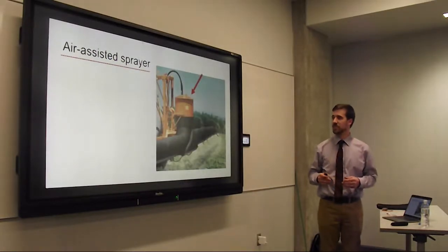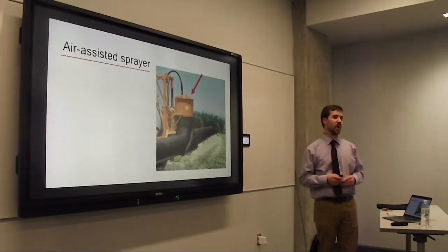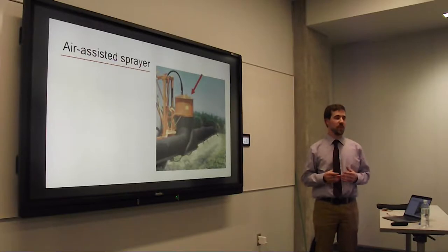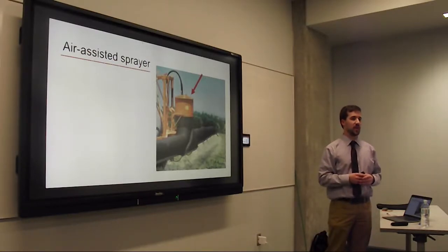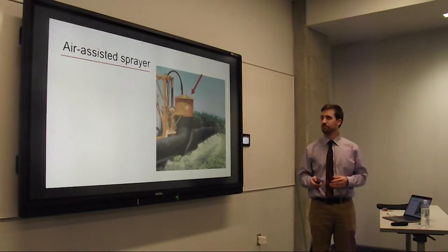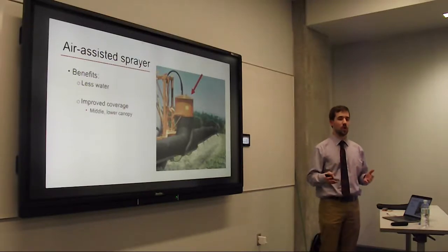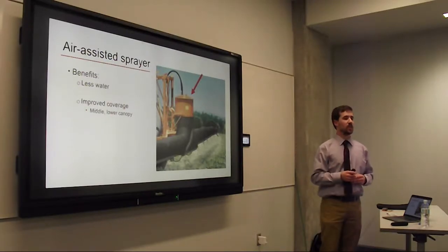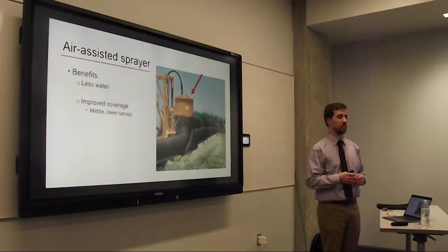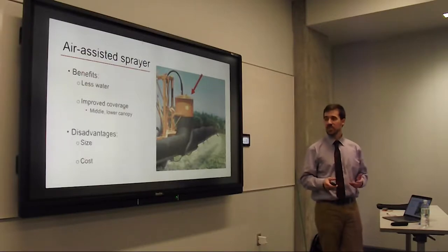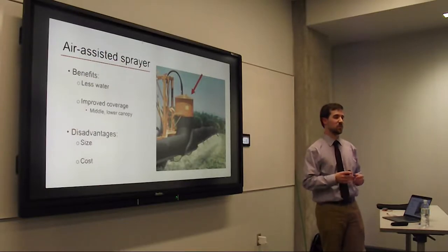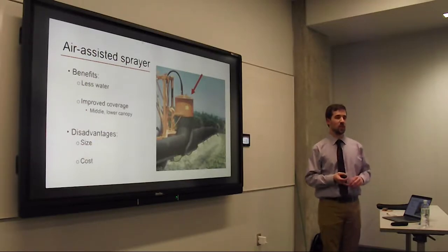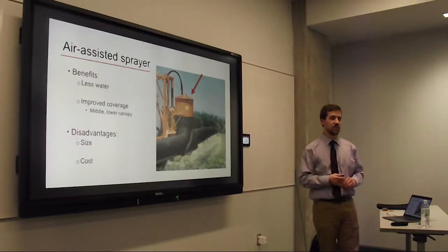The second method is the air-assisted sprayer. These have been very popular in Europe for a long time but didn't make their way to the United States until the 70s or 80s. This method uses a fan that opens up the canopy and drives droplets further down onto the plant. Benefits include using less water, and literature confirms this method does provide better coverage in the middle and lower canopy. The disadvantage is size — the maximum boom size is 60 feet, half of a traditional sprayer, meaning more cost, labor, and time in the field.